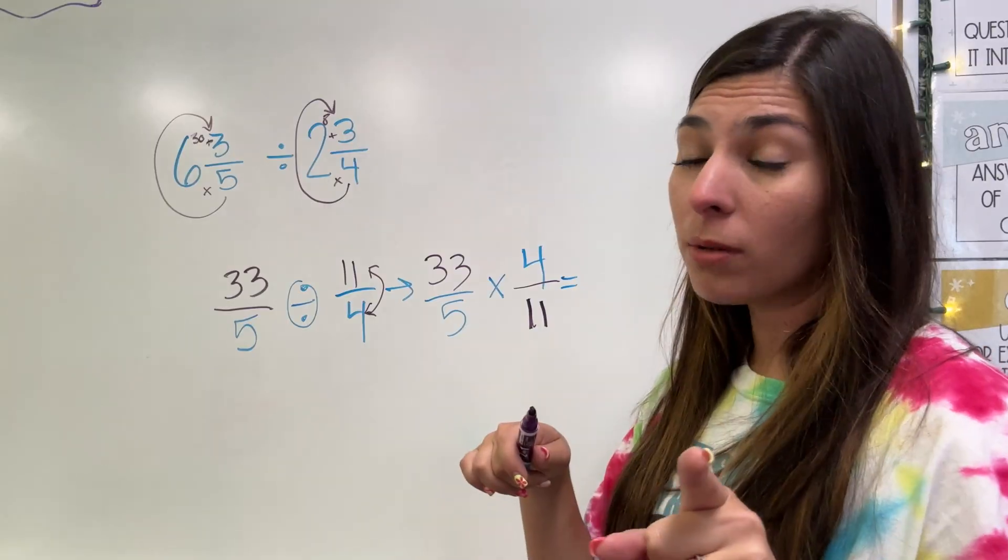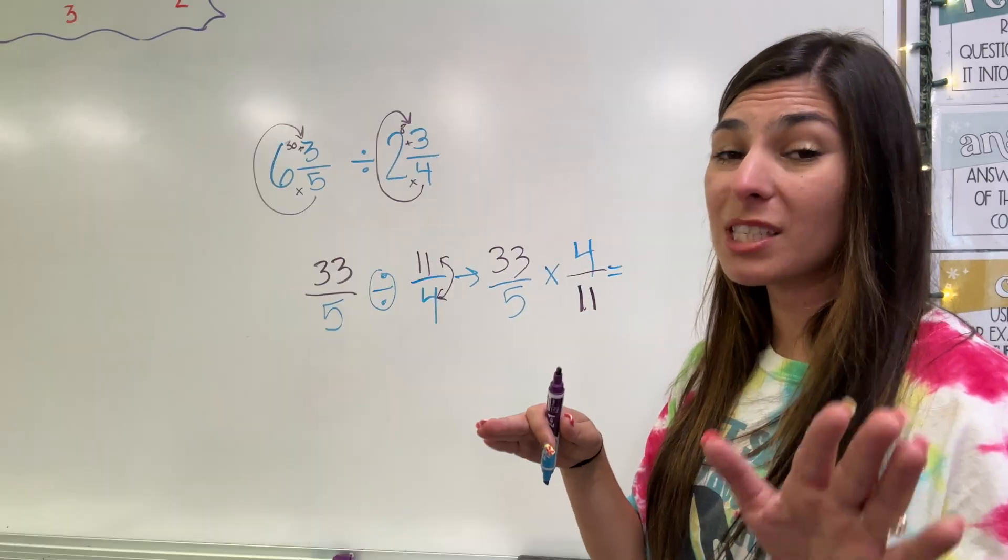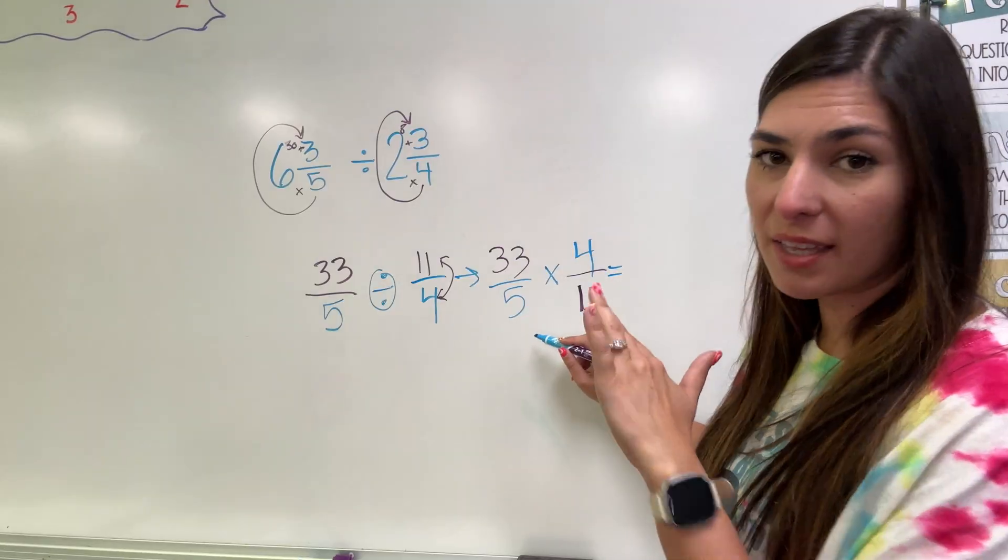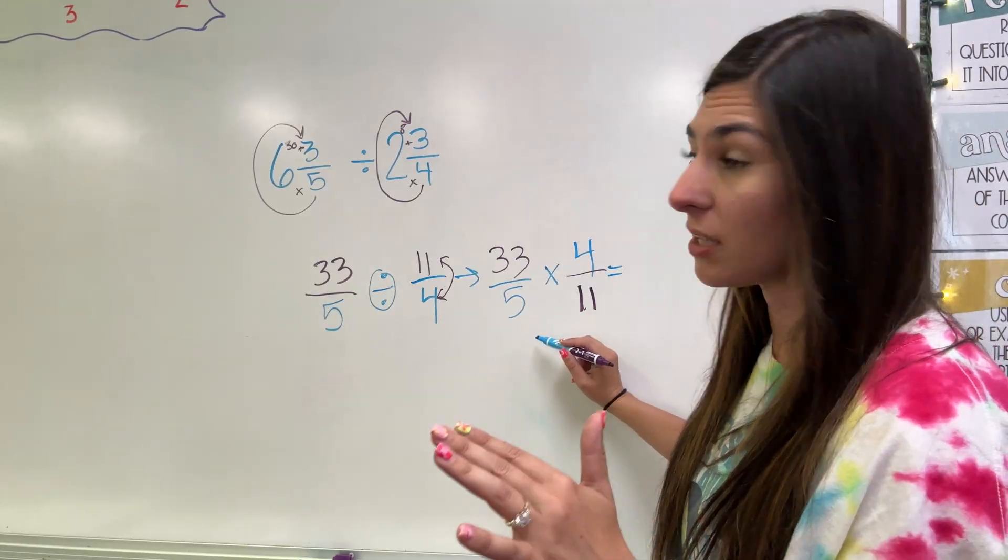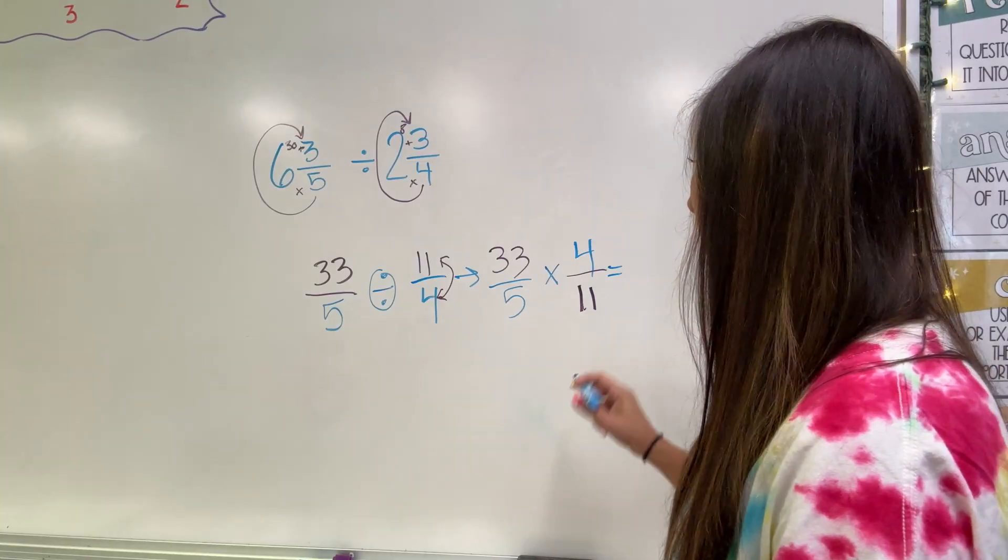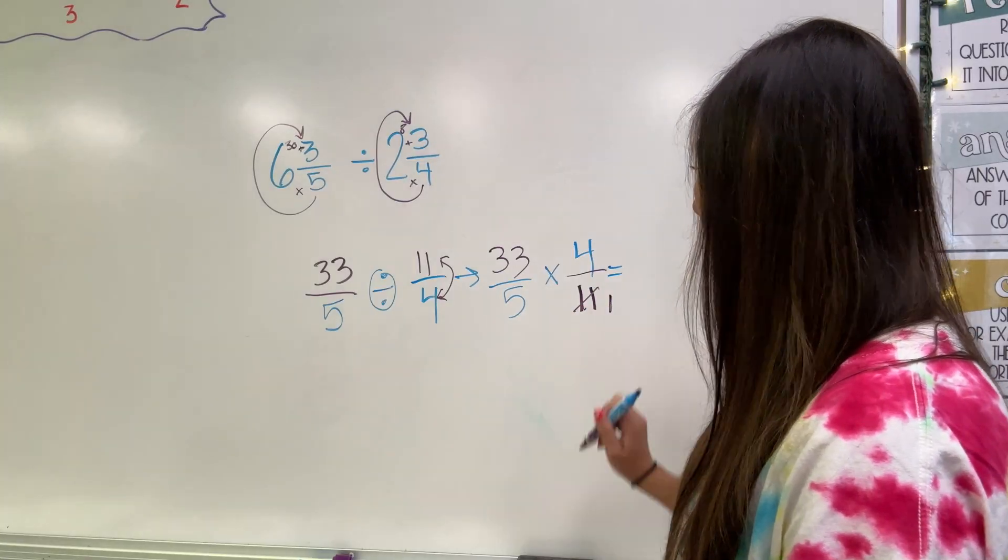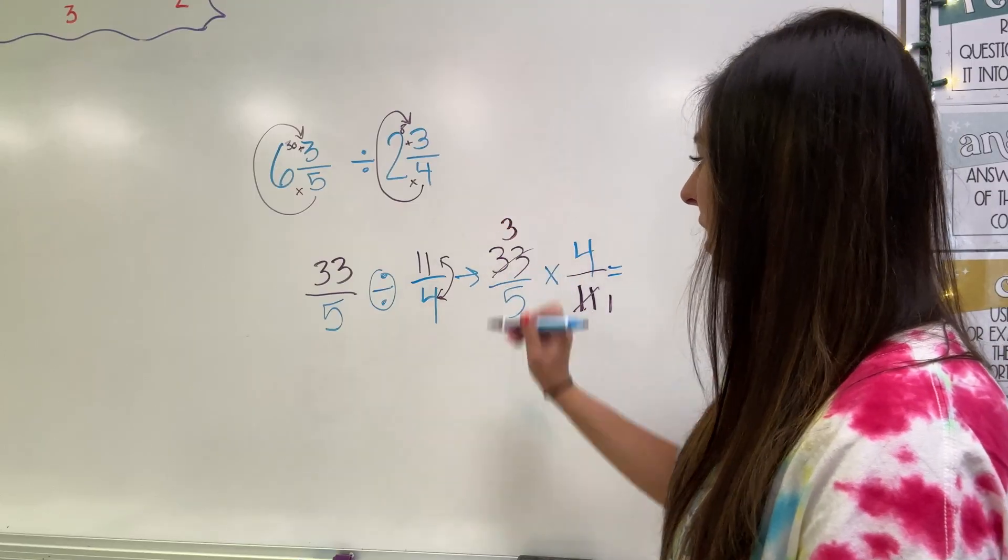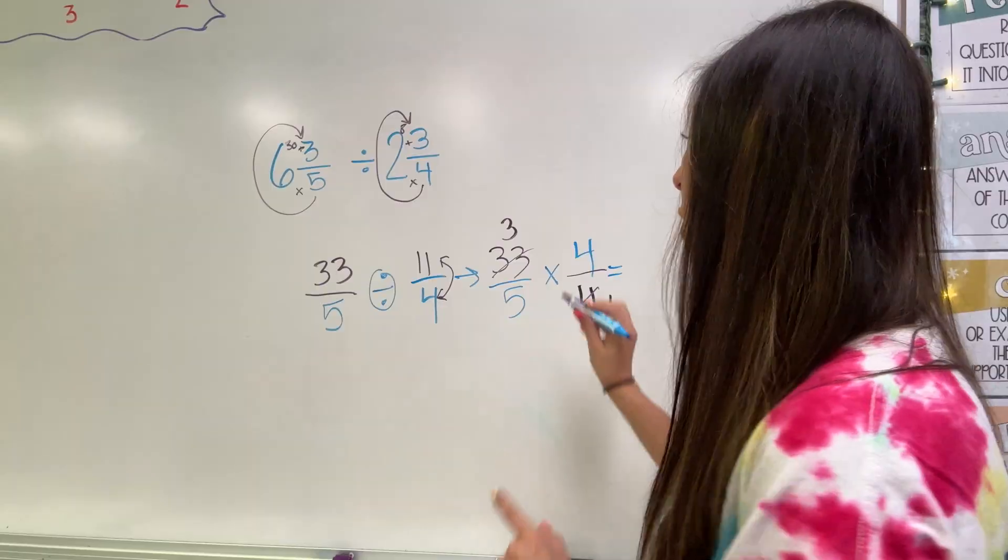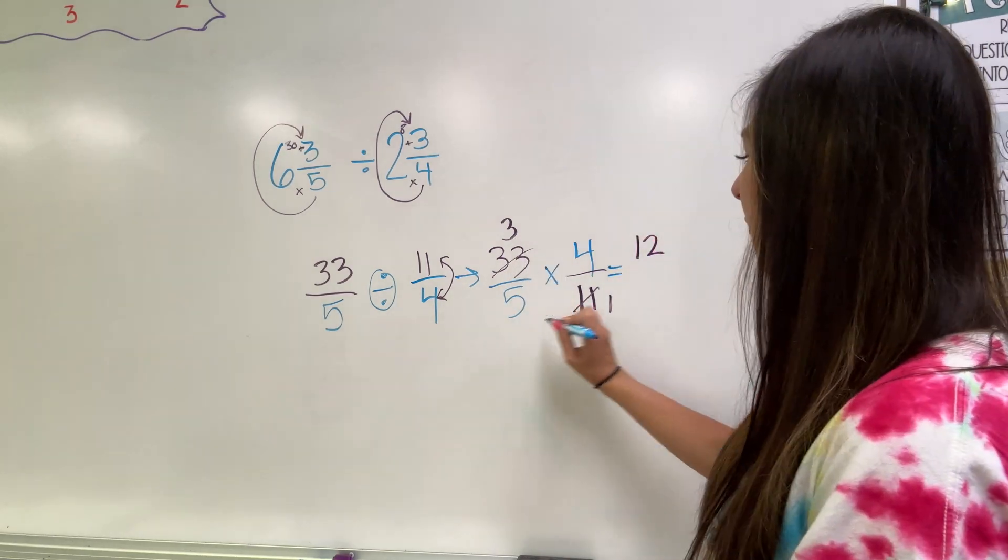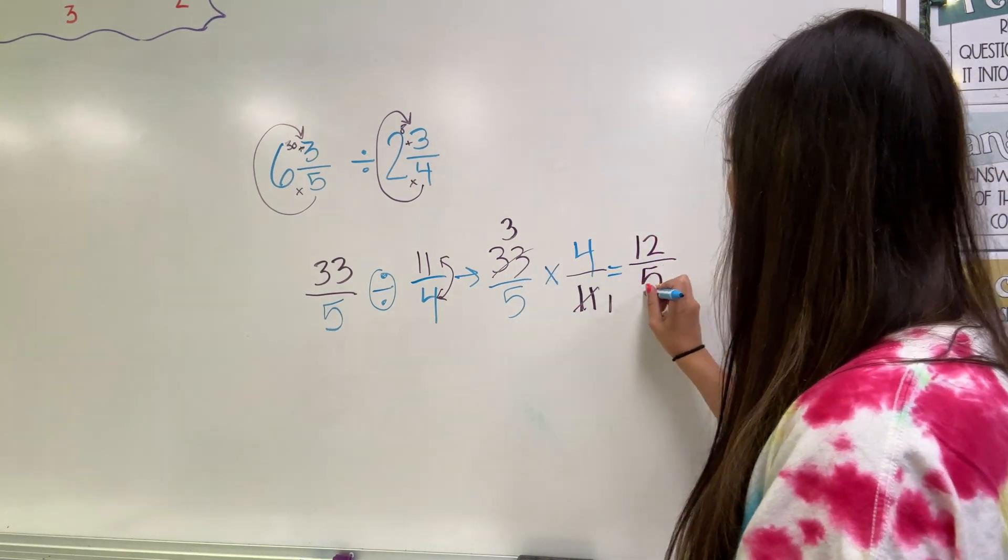From here, I can solve or check if I can simplify. When we simplify, we simplify looking diagonal. So I cannot simplify four and five. There's nothing that goes into both of those numbers evenly. Instead, I'm going to look at 33 and 11. Well, 11 can go into 11 one time and 11 could go into 33 three times. That just simplified my multiplication. So now I have three times four. That's going to give me 12 and five times one is going to give me five.